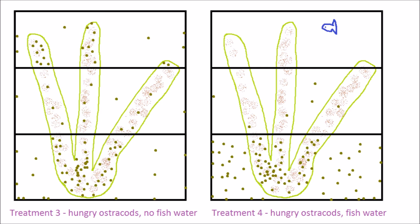This figure compares treatments 3 and 4 to show the effect of the fish water. The ostracods were hungry and so wanted to feed on the periphyton, including in the upper parts of the Chara stems, as you can see on the left. However, when the fish cues were present, the ostracods clustered closer to the bottom. This and all the other comparisons that I'll discuss are statistically significant.